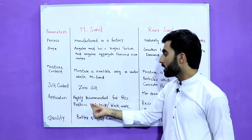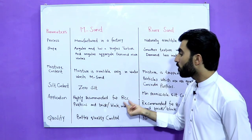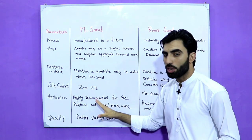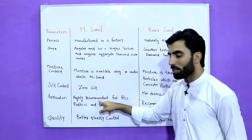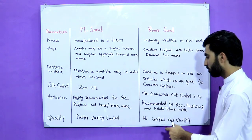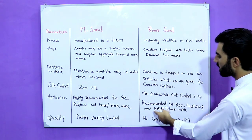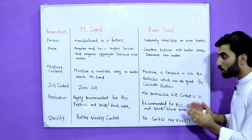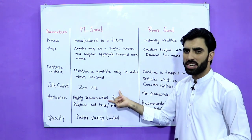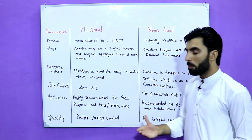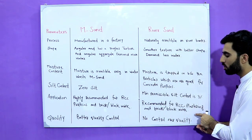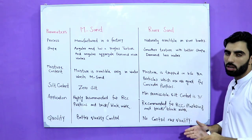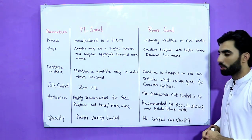About applications: M-sand is highly recommended for RCC purposes and also for brick or block work. River sand is also recommended for RCC and for plastering. You cannot use M-sand in plastering because it has a rough texture, whereas river sand is smooth, making it suitable for plastering, brick masonry, and block masonry as well.